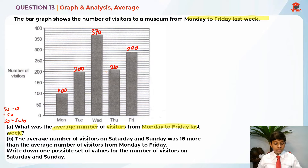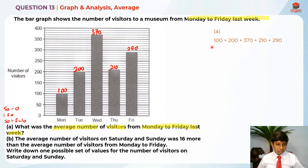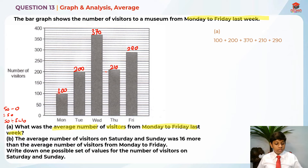Now that we have the values for each bar — Monday, Tuesday, Wednesday, Thursday, and Friday — we can move on to finding the average. In order to find the average, we need to find the total first. So I'm going to take 100 plus 200 plus 370 plus 210 plus 290. All of them added together is 1170.